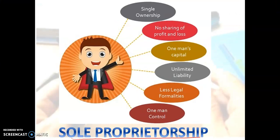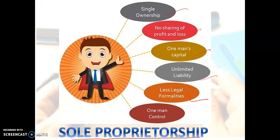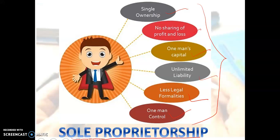Let us see the characteristics first. It is about single ownership — no sharing of profit and loss with any other person. One man will invest the capital. There is unlimited liability, as you can read about in your accountancy paper — liability means what you have to pay to outsiders. There are less legal formalities, and only one man controls the business.